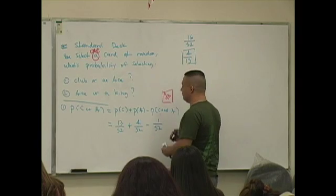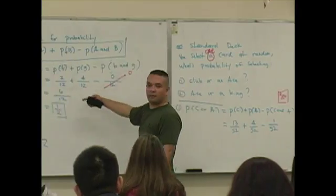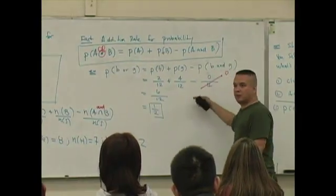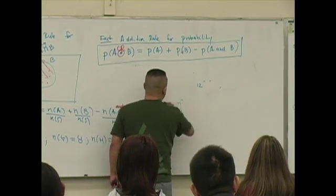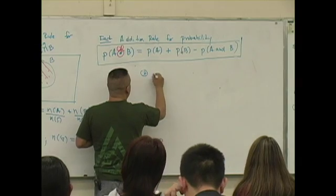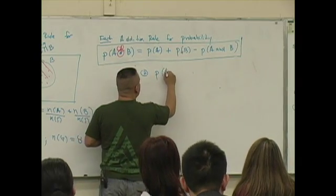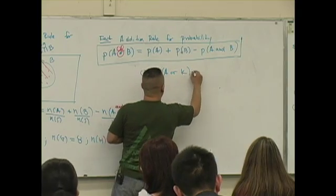Compare that to determining the probability of selecting an ace or a king: probability of selecting an ace plus the probability of selecting a king minus the probability of selecting an ace and a king.